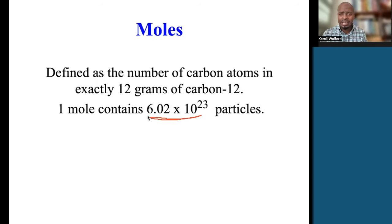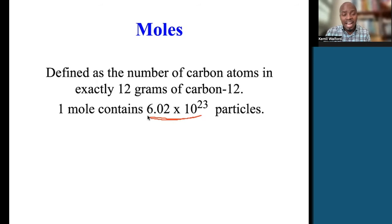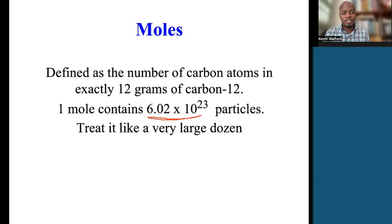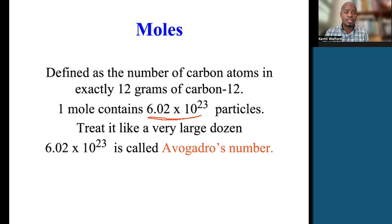This is six with 23 zeros at the end — 602 hexillion or something like that. It's a huge number. This number has a special name: it's called Avogadro's number. So 6.02 times 10 to the 23rd is called the Avogadro's number. Treat it like a big dozen.